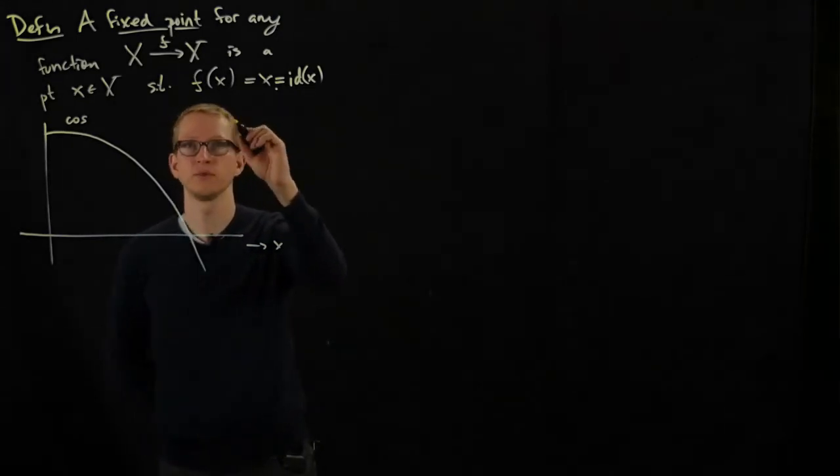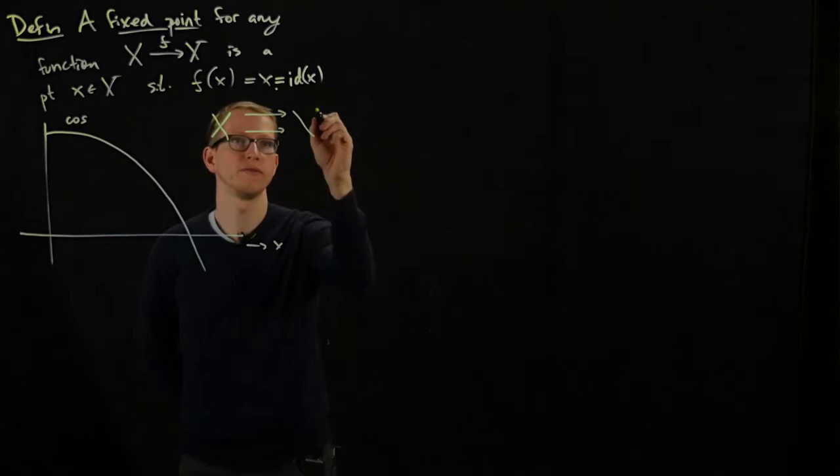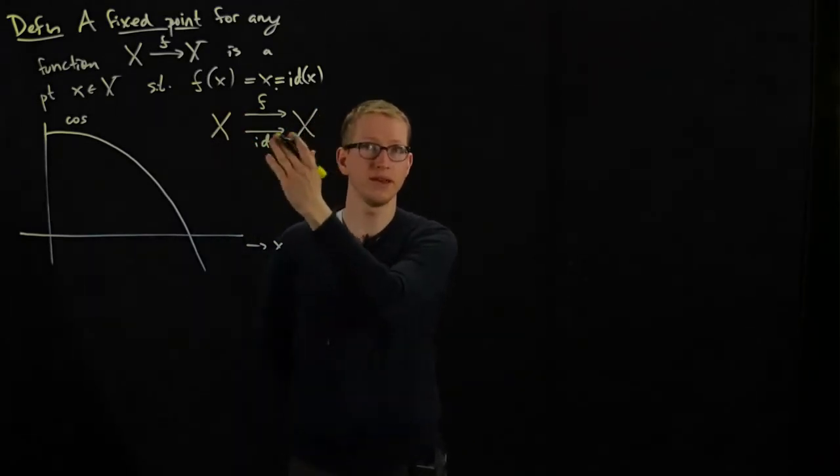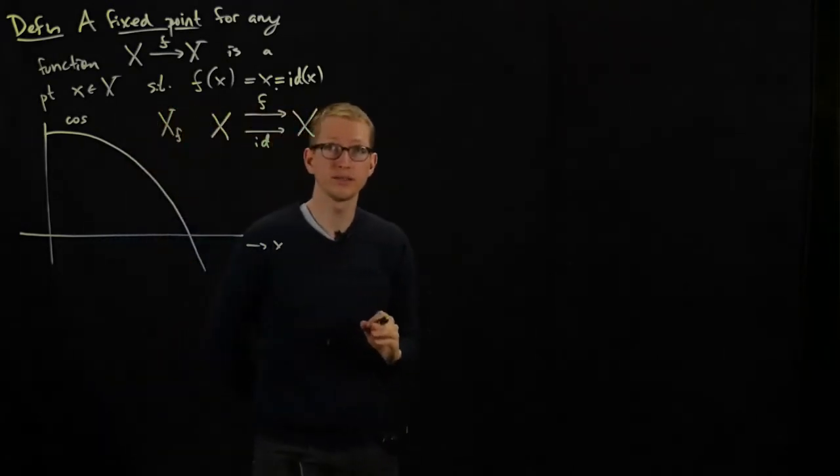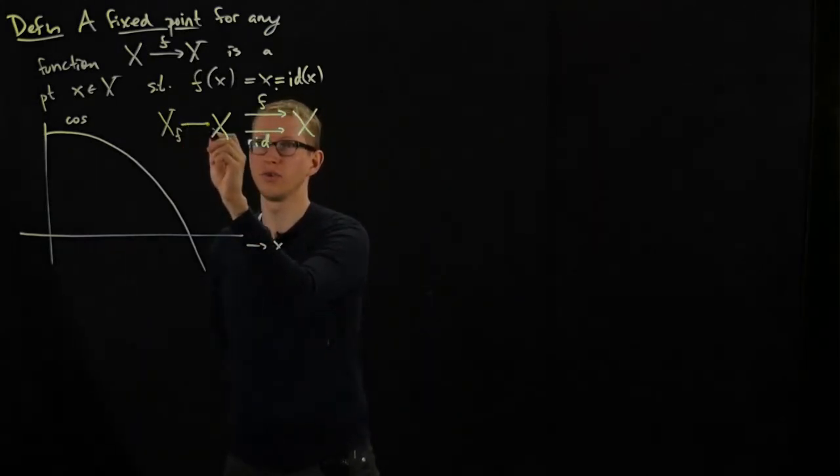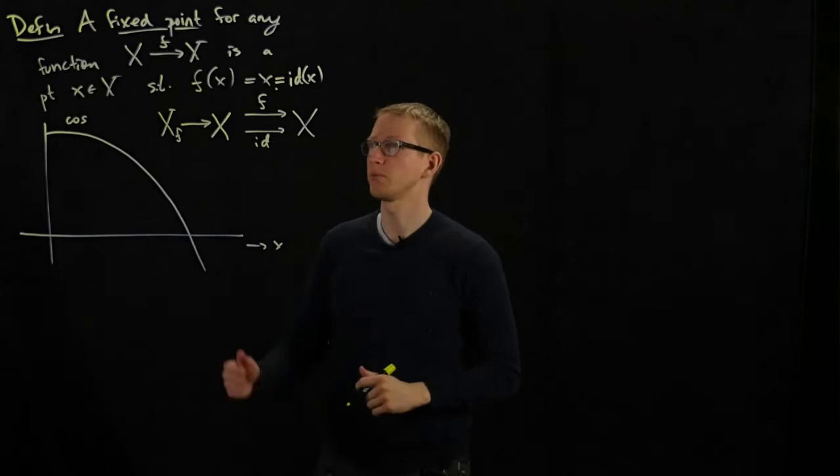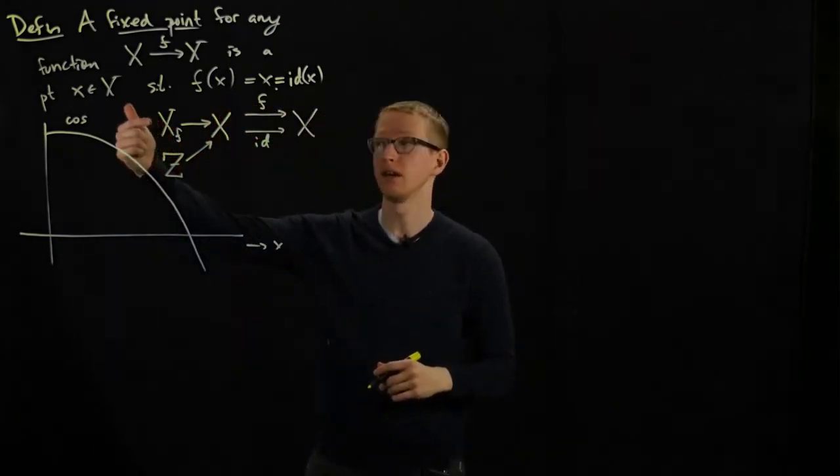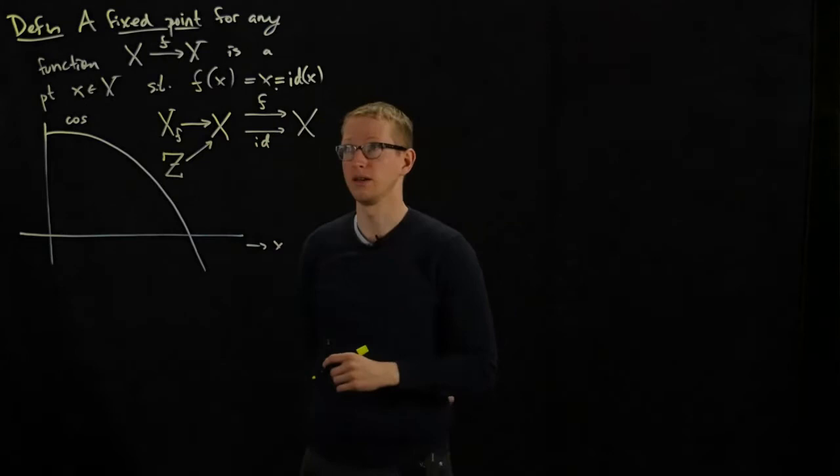In fact, there's a diagrammatic way of thinking about what are fixed points. If I take two functions from a set to itself, one of them is f and one of them is the identity, then the set of fixed points, let's call it x subscript f, is a set with a function into x satisfying a particular universal property. That universal property says that for any other set z with a map to x, I should have mentioned that this map satisfies the condition that a function from here composed with f equals the function composed with the identity.